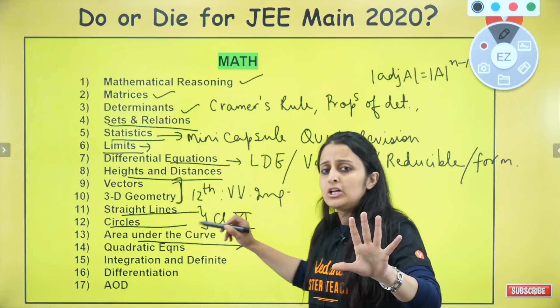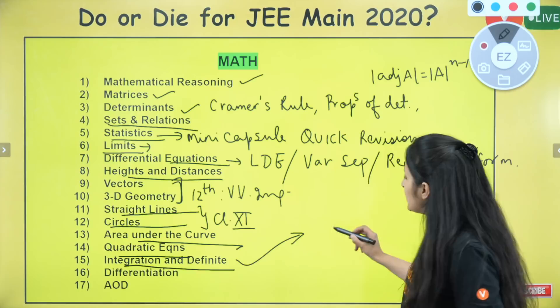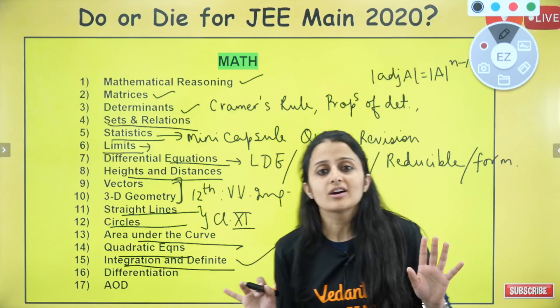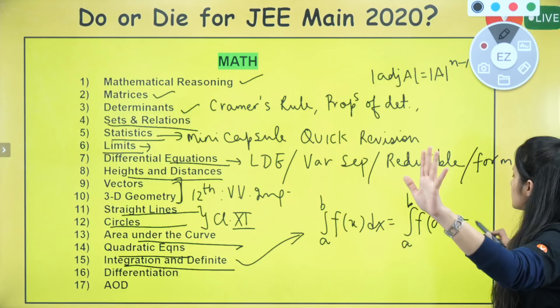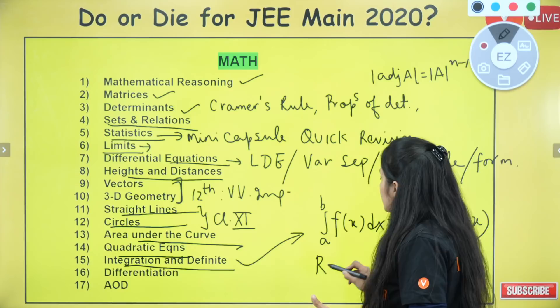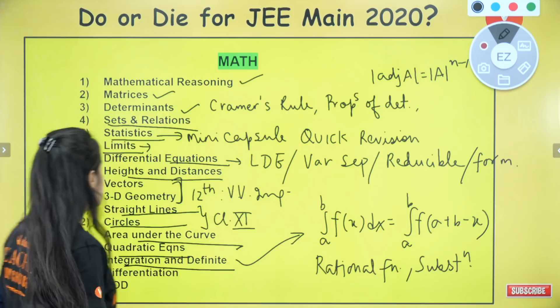For area under the curve, quadratic equations, integration, and definite integration — the most important rule is the King's rule, which consistently scores. Integration of rational functions is the most repeated, along with substitution and integration by parts. Differentiation is also a must — you definitely have to do it, including differentiating on both sides.